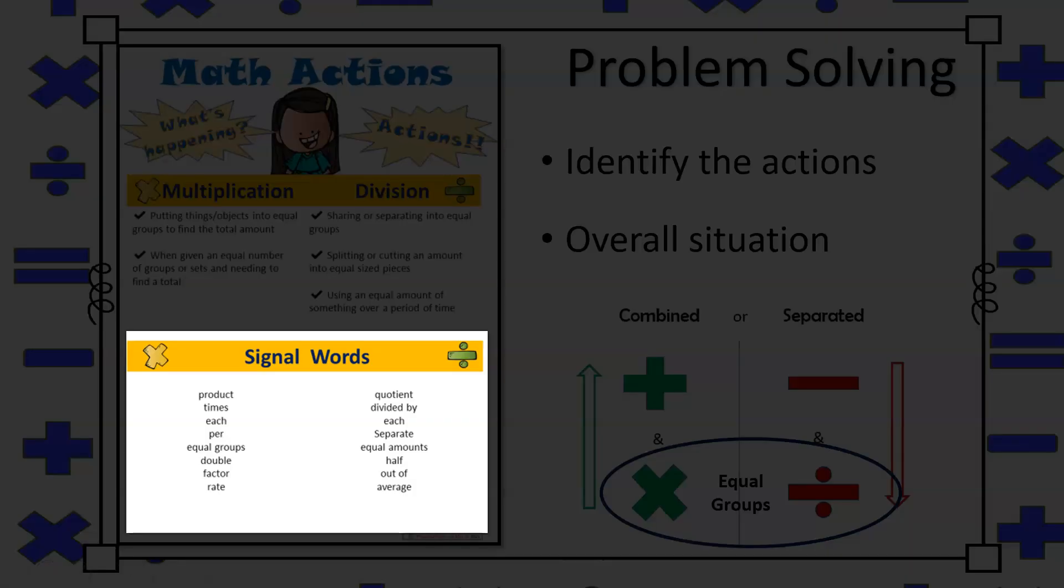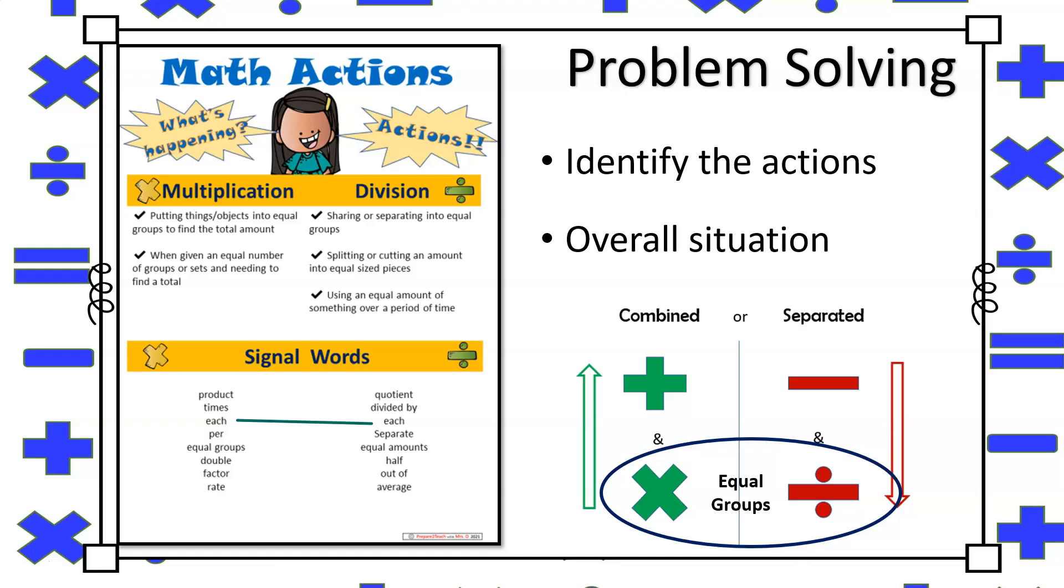As you can see here in our signal words chart, both multiplication and division word problems tend to refer to equal amounts or groups and often include the signal word each. However, in contrast,